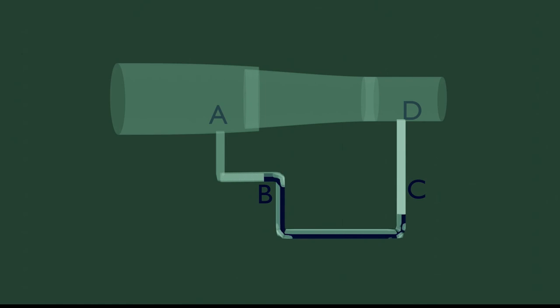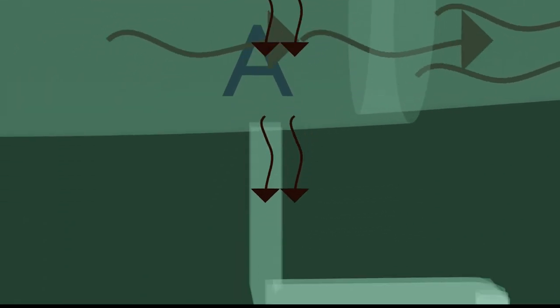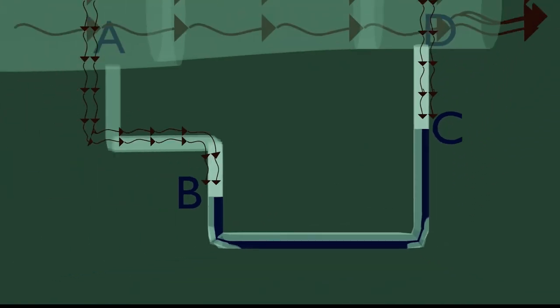When fluid such as air enters the tube, then there is pressure difference between point A and D. The air also flows on pipe AB and DC, which creates pressure on blue liquid. Notice how the blue liquid shifts due to pressure difference between the air.